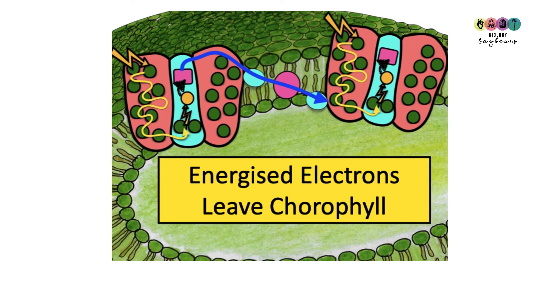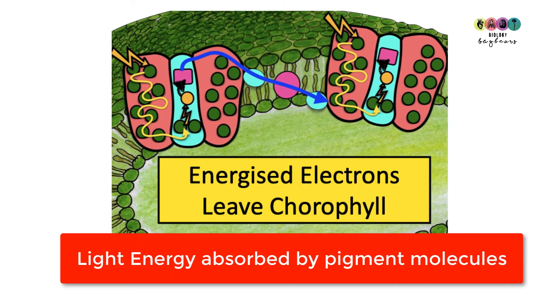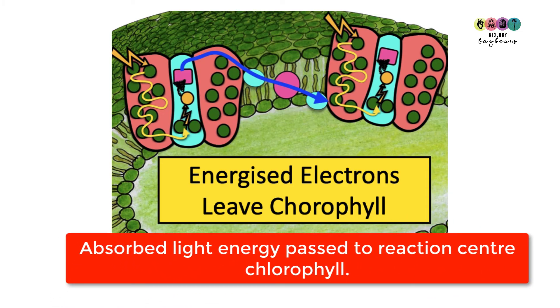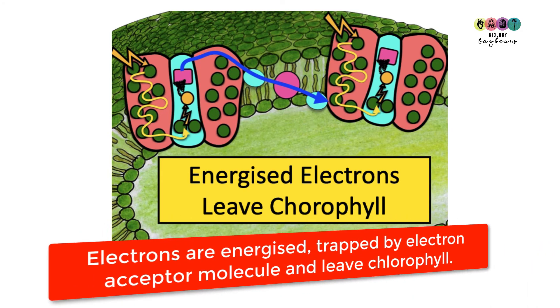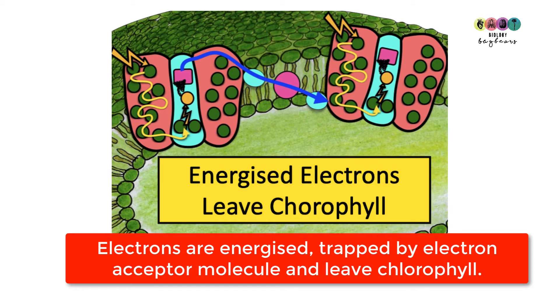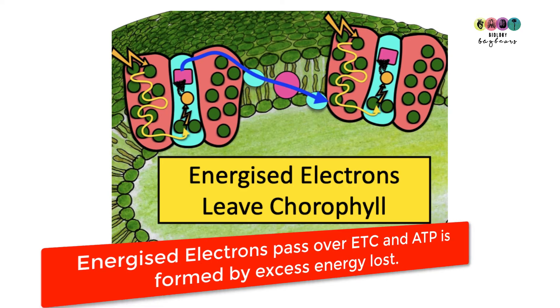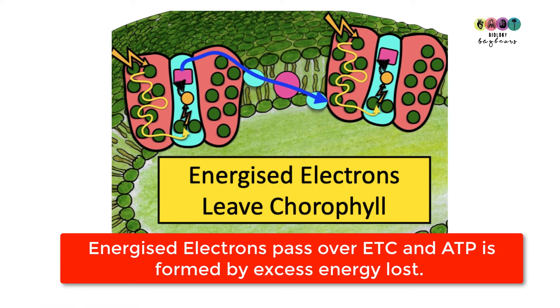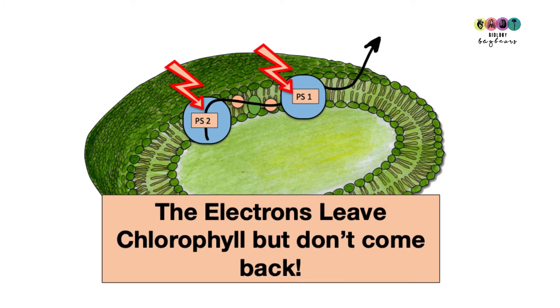Light energy is once again going to be absorbed by those pigment molecules and passed eventually to the reaction center chlorophyll. When it receives all of this energy, it's going to result in an electron being energized. When it's energized, it leaves chlorophyll and is picked up by an electron acceptor molecule. It eventually gets passed over an electron transport chain and loses energy where ATP is made from that lost energy. The electrons do not return to chlorophyll.